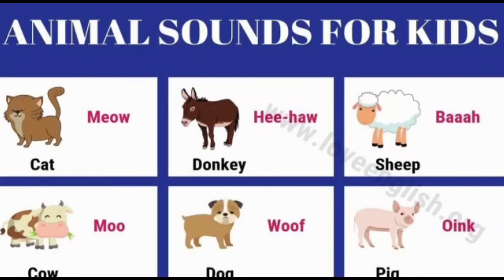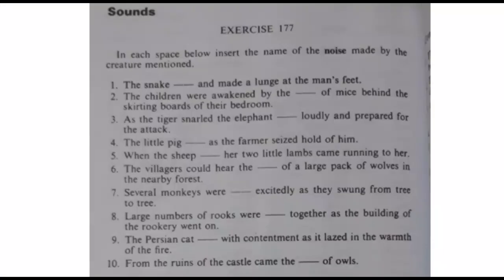As you can see, the animal sounds are listed. Now let's discuss the exercises. Exercise 177, page number 142. What do you have to do in this exercise? In each space below, insert the name of the noise made by the creature mentioned. You are given this exercise, and the noise that is mentioned is not written in the blank.